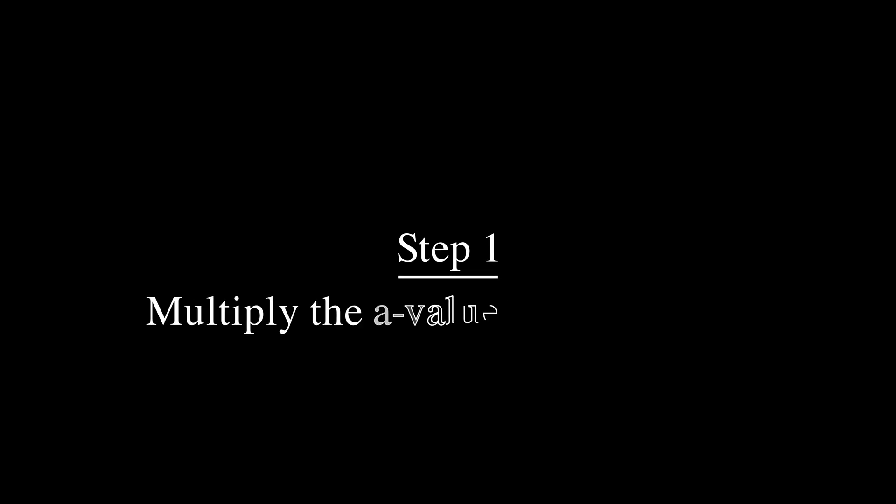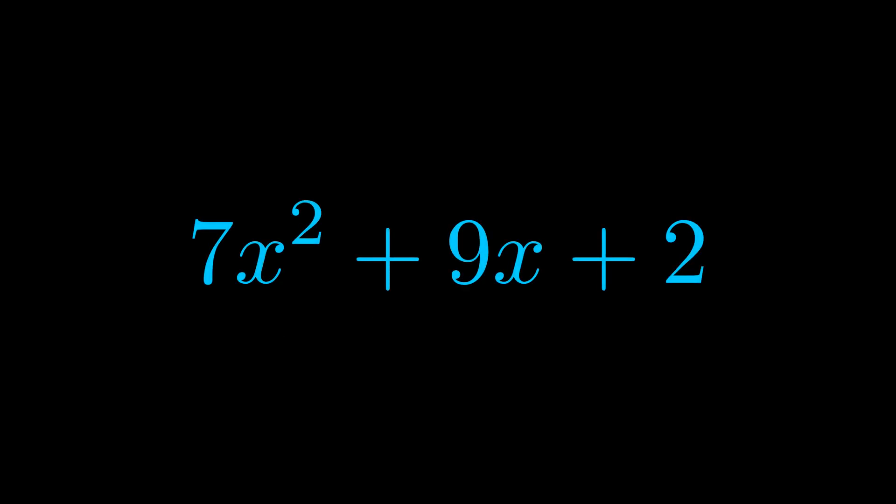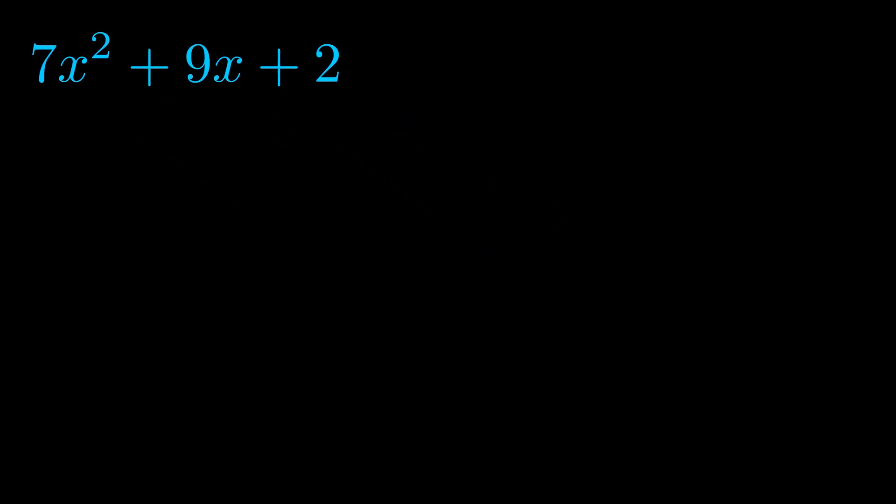Step one when factoring an equation of this form is to multiply the a value by the c value. Here we can see that our a value is the coefficient on the x squared term and our c value is the constant term. When we multiply these two values we get this value here in magenta.